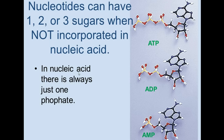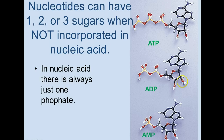When nucleotides are single — not part of nucleic acid — there can be either one, two, or three phosphates. Here you see examples of adenosine monophosphate, adenosine diphosphate, and adenosine triphosphate. The adenine is the base part in each one. Here's the sugar — and this is the ribosugar, because there are oxygens in both the two and three-prime positions.